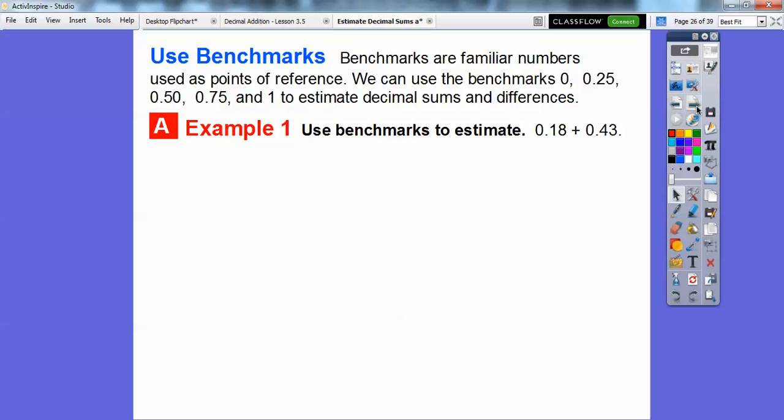Use the benchmarks we have above to estimate. This is read 18 hundredths plus 43 hundredths. It's 0.18 plus 0.43 because this ends in the hundredth spot.